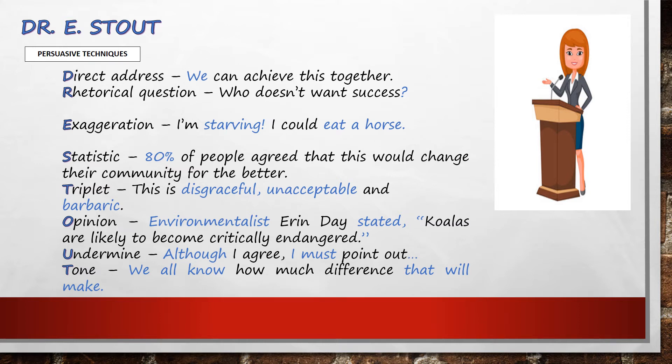Today we're going to look at the mnemonic Dr. E. Stout. This is our persuasive techniques. The word 'stout' when describing an object means strong, and that's what we want our persuasion to be. It could be that we're persuading someone, wanting them to agree with us, arguing our point of view, or maybe even giving advice. Using these persuasive techniques will help you to do that.